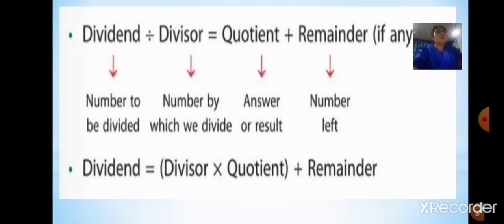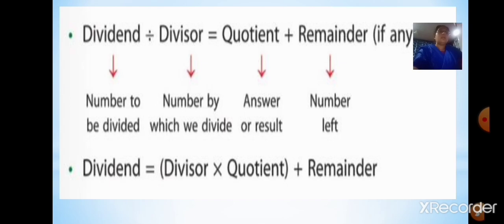Coming to the fourth basic operation, that is division. The number to be divided is called the dividend. The number by which we divide is called the divisor. The answer or result we get is called the quotient, and the number left at the end is called the remainder. To check whether your division is correct, the formula is: dividend equals divisor multiplied by quotient plus the remainder.